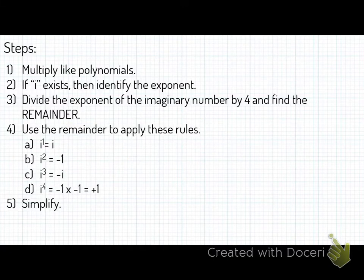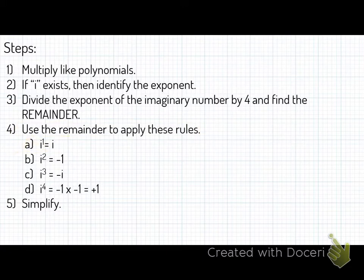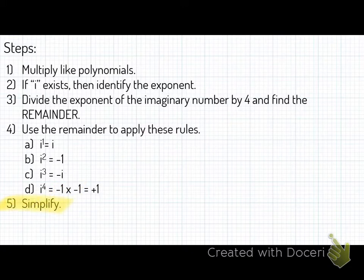Let's go to the next slide. Here are your steps — start writing them down. For today, you're going to be multiplying like polynomials. Then if i exists, identify the exponent. The next thing you're going to do is divide the exponent of the imaginary number by 4 and find the remainder. Then use the remainder to apply these rules: i to the first is just i; i squared is equal to negative 1; i to the third is equal to negative i; i to the fourth is like saying i squared times i squared, which is negative 1 times negative 1, which is positive 1. And of course we simplify. Take a moment to pause the video here.